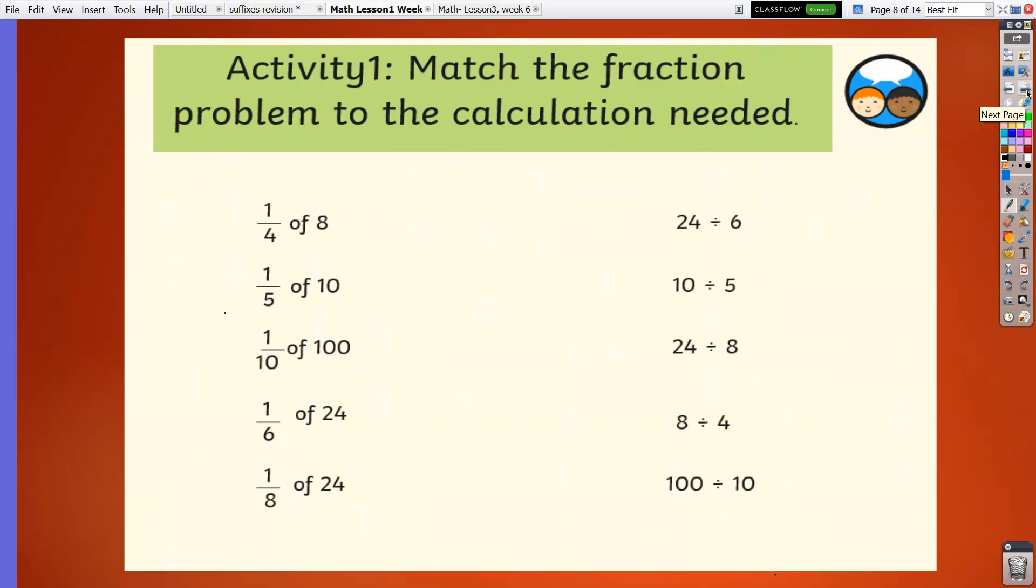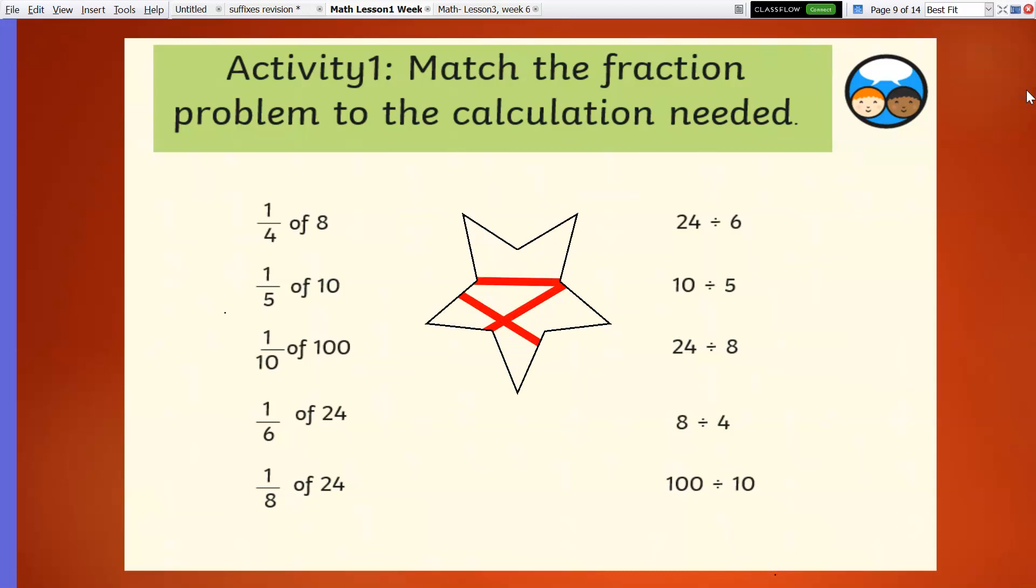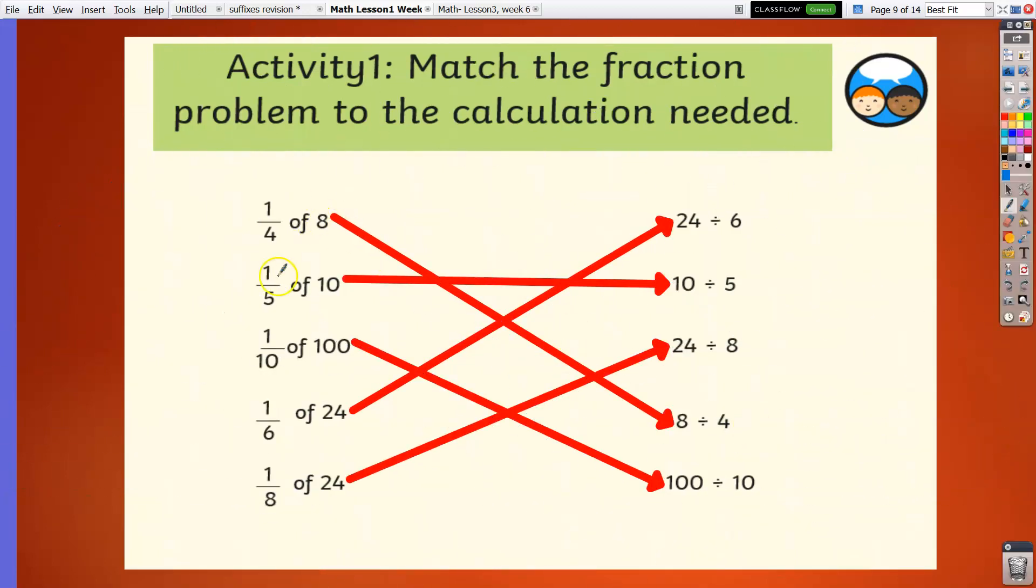Time is up. Here's the correct answer. One-fourth of 8 is equal to 8 divided by 4. One-fifth of 10 is 10 divided by 5. One-tenth of 100 is equal to 100 divided by 10. One-sixth of 24 is 24 divided by 6. And one-eighth of 24 is equal to 24 divided by 8.